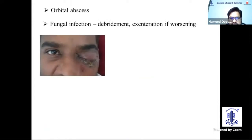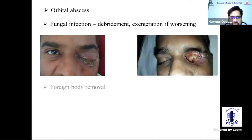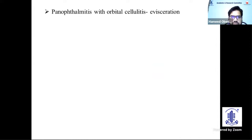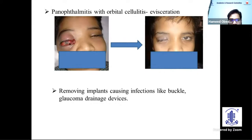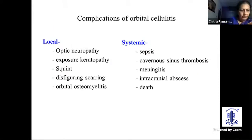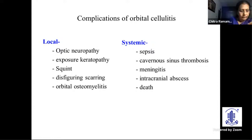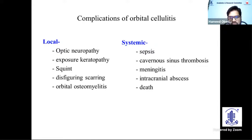Other indications include fungal infection, which requires extensive debridement or even exenteration if worsening. Foreign bodies should be removed if causing orbital cellulitis not responding to IV antibiotics. Evisceration should be performed for a blind and painful eye causing orbital cellulitis, such as a blind eye from glaucoma. Complications of orbital cellulitis include locally: optic neuropathy, exposure keratopathy, disfiguring scar, and orbital cellulitis itself. Systemically: cavernous sinus thrombosis, meningitis, intracranial abscess, and rarely death.